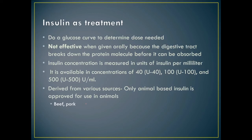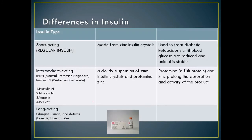Intermediate-acting insulin includes NPH — neutral protamine Hagedorn — and PZI — protamine zinc insulin — commonly used and formulated for veterinary use, though Humulin and Novolin are used as needed. PZI is a cloudy suspension of zinc insulin crystals and protamine zinc, a fish protein, which prolongs absorption and activity.